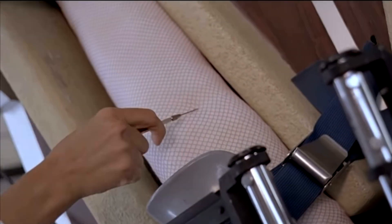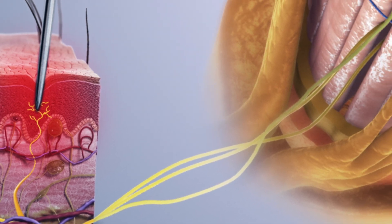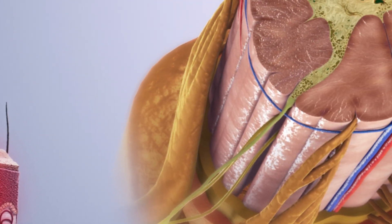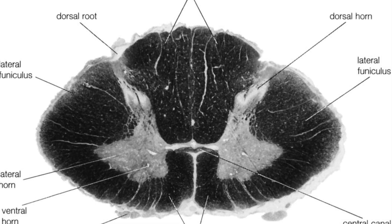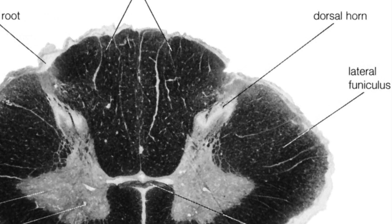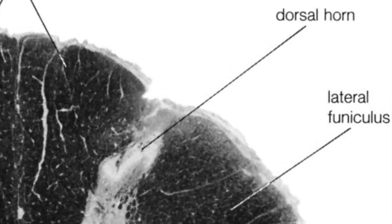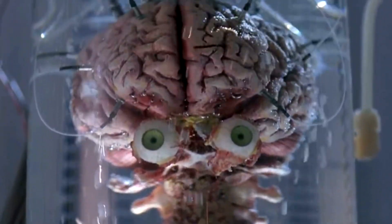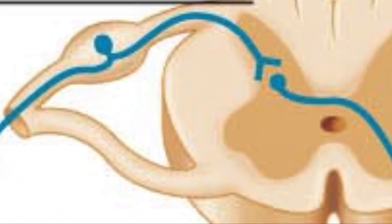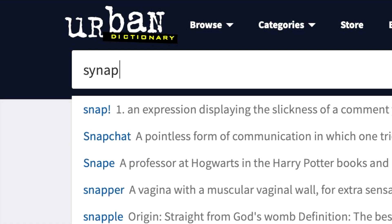When stimulated, nociceptors will propagate this noxious information straight to the spinal cord, as they are the first in a chain or tract of neurons. Those nociceptors are also known as first-order neurons. The dorsal horn is the very spot where incoming, or afferent, noxious signals enter the spinal cord. Thousands of nerve cells are aggregated this way to form dorsal sensory fibers.